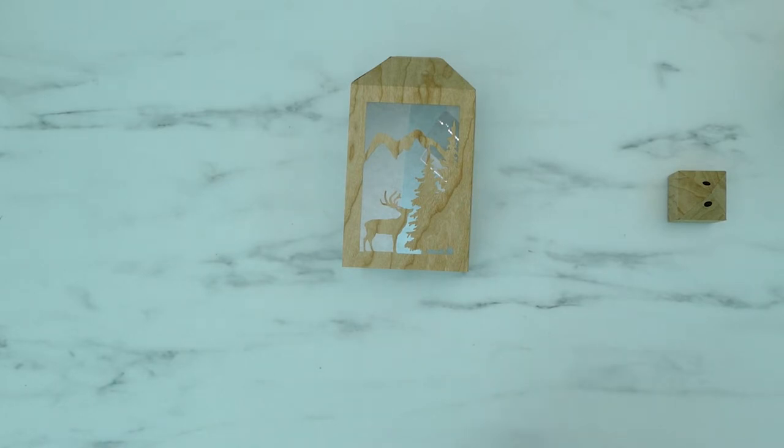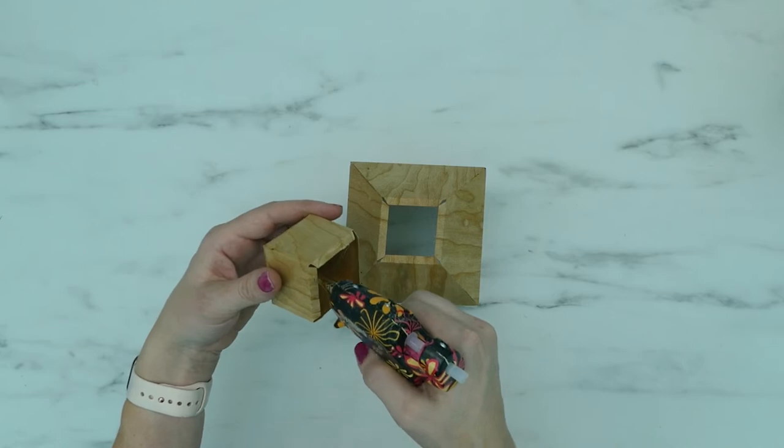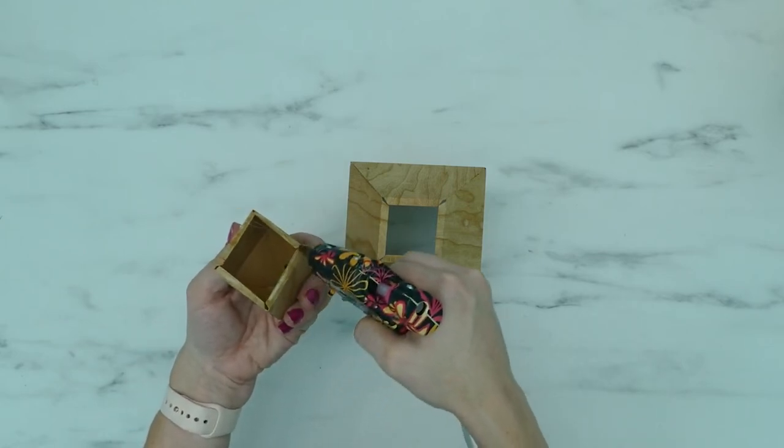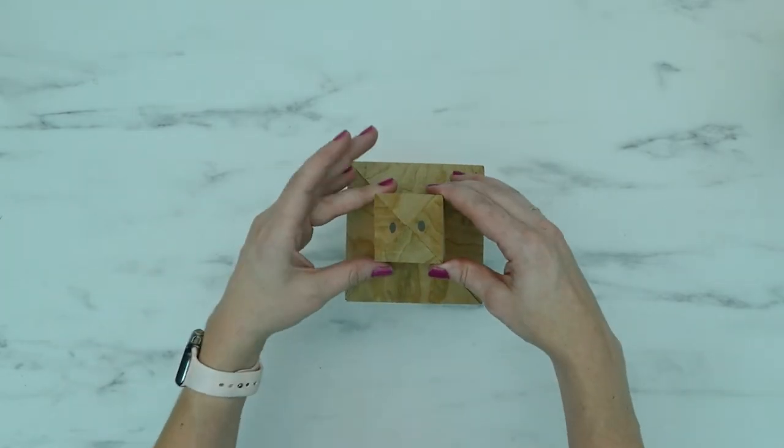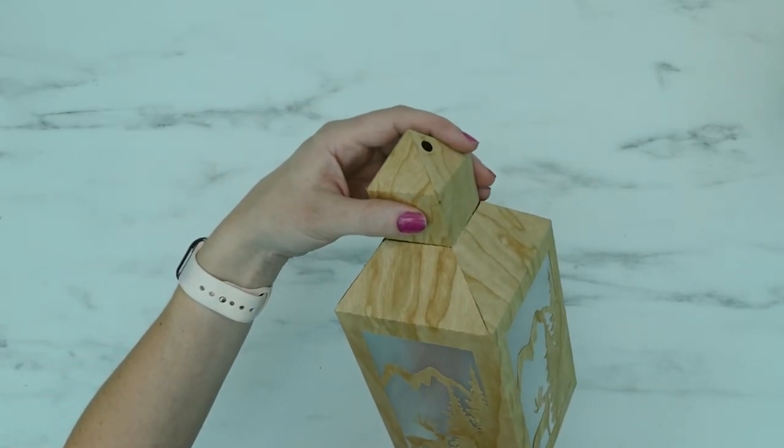Next you can attach the top piece of the lantern to the bottom section. I found it was easiest to use hot glue for this step. You can reach inside of the lantern and use your fingers to press the tabs together while the glue is cooling.